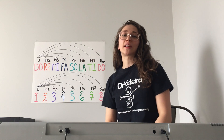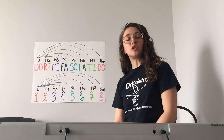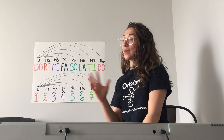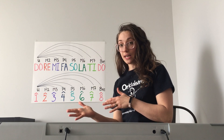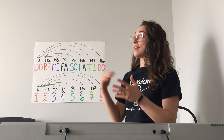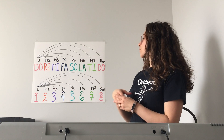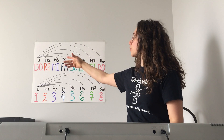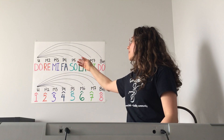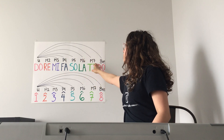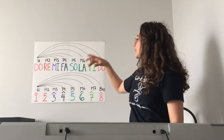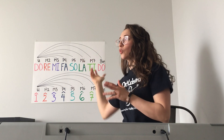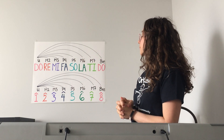An interval is the space between two notes, and there are two parts to the name of an interval: first there's the quality of it, and then the number. So you'll see most of these have a letter in front of them which refers to the quality, and then a number after it. Some of them have exceptions but they still have a quality to it — we just don't really write it that way most of the time.